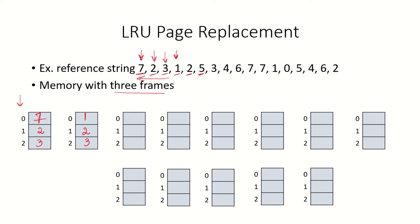Page 5 is not in memory, so it causes a page fault. Looking backwards, page 2 has been used very recently, page 1 has also been used recently, and page 3 was used earliest compared to 1 and 2. So page 3 will be replaced by page 5. Next comes page 3 — since it was replaced, it causes a page fault again. Looking backwards, page 5 and page 2 have been used recently, and page 1 was the oldest, so page 1 will be replaced by page 3.